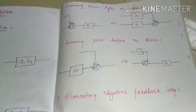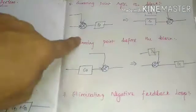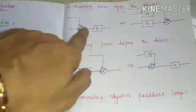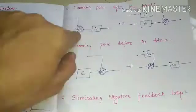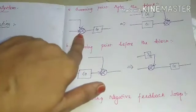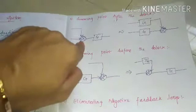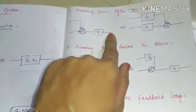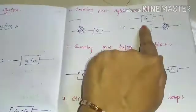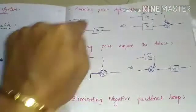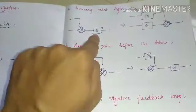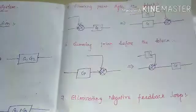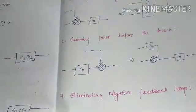Rule number 5 is moving the summing point after the block. Here there is a summing point — the circle with plus signs. We are going to shift this summing point after the block. While shifting the summing point after the block, we have to multiply that block's gain. Note: if you are shifting the takeoff point after the block, you divide; but for the summing point, it is vice versa — shifting the summing point after the block means you multiply.